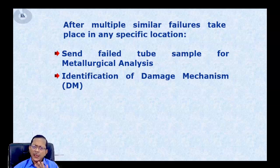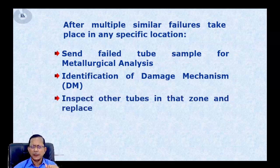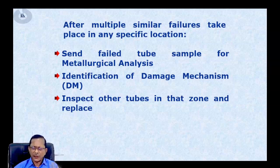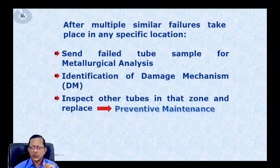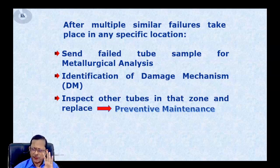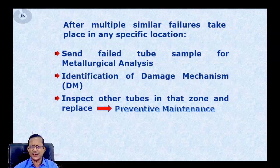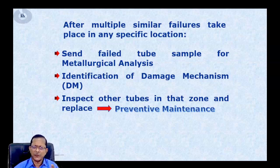Once we understand — say, it's overheating — we inspect the nearby zone tubes to see if similar damage mechanisms are present, and if so, we replace those tubes so they don't fail in the near future. We call this a preventive maintenance practice. But does it prevent a tube failure? Have we removed the root cause — the one mistake actually leading to this damage mechanism? In 90% of cases, no.